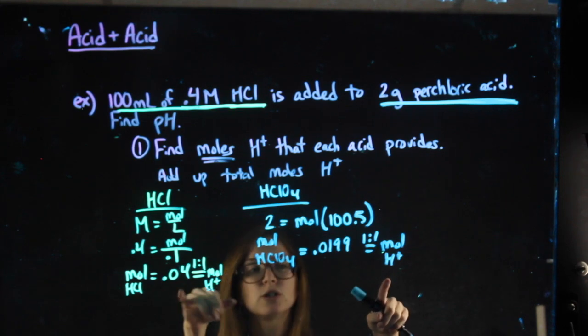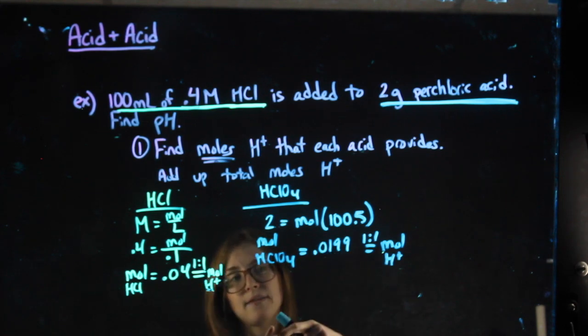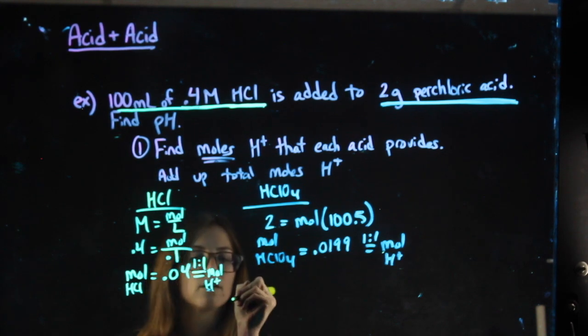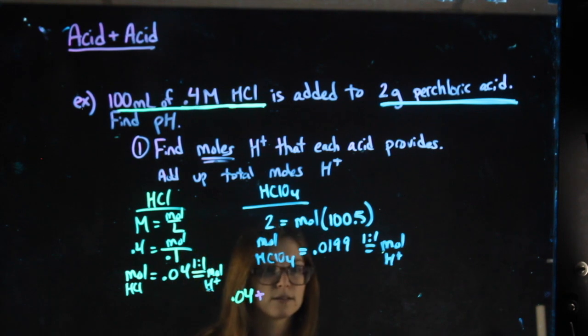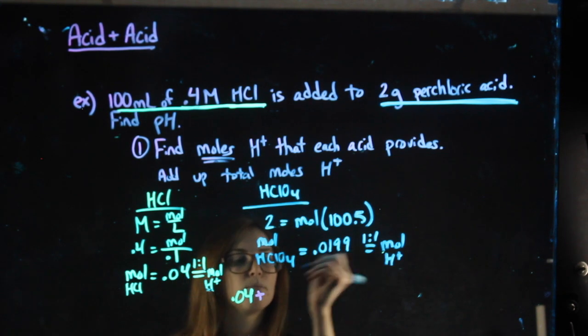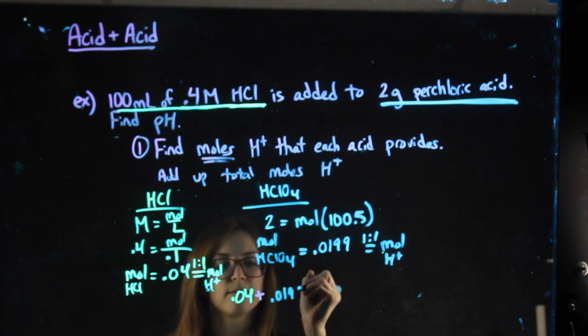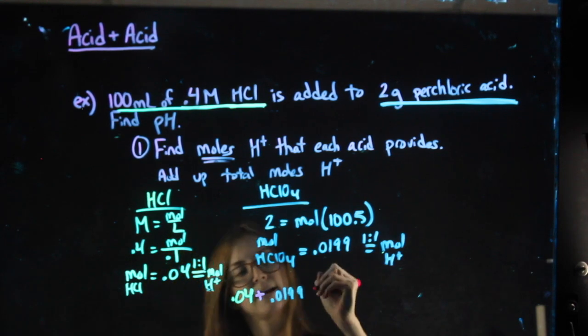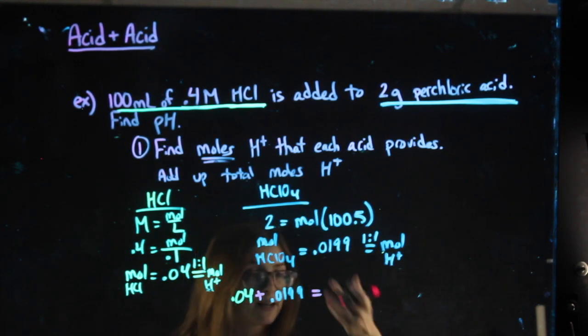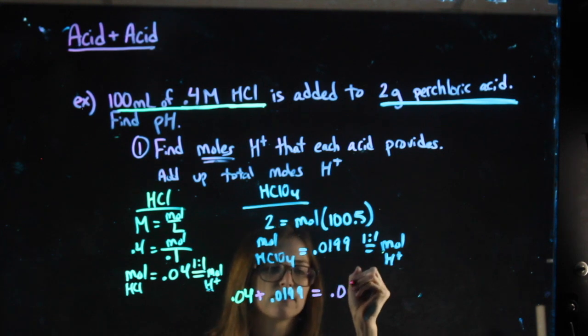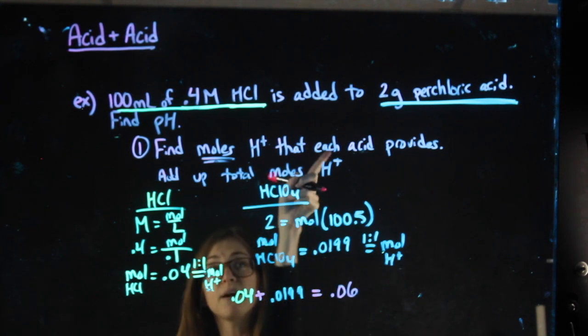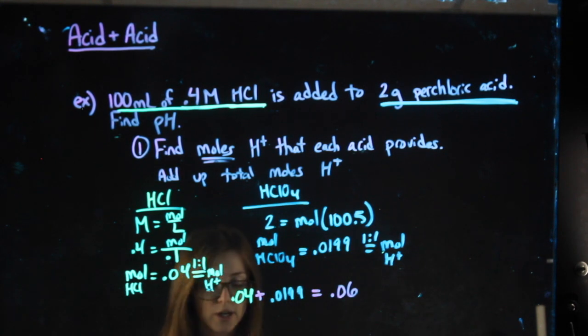Okay, I have my moles of each H+, and I'm going to add those together. So 0.04 plus my 0.0199 gets me my total moles to be, if I round it, frankly, it's going to be 0.06. Okay, I've done my first step. I found the moles of H+ for each.